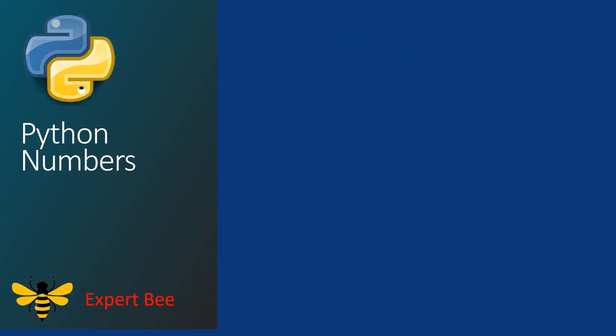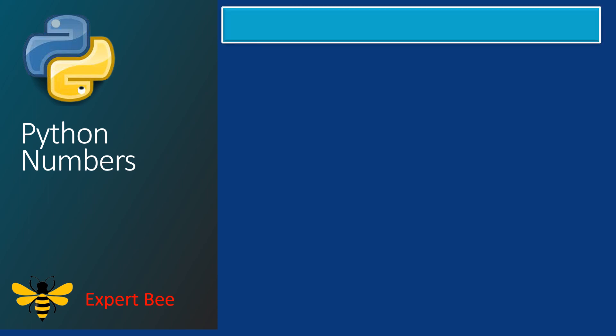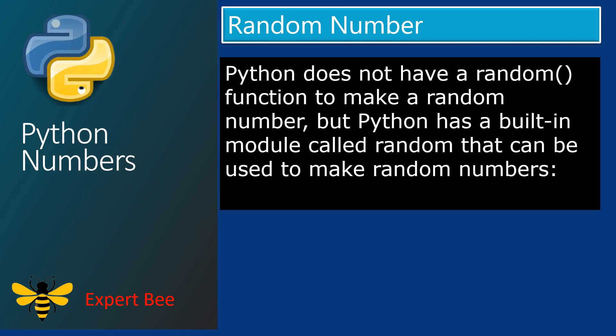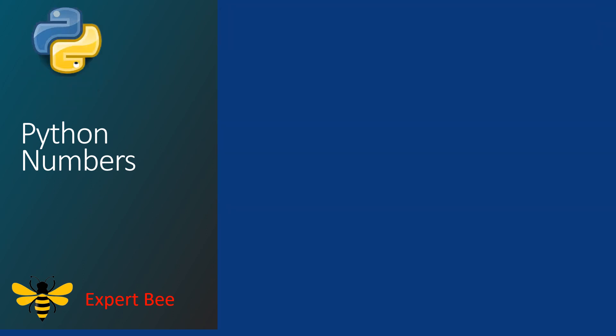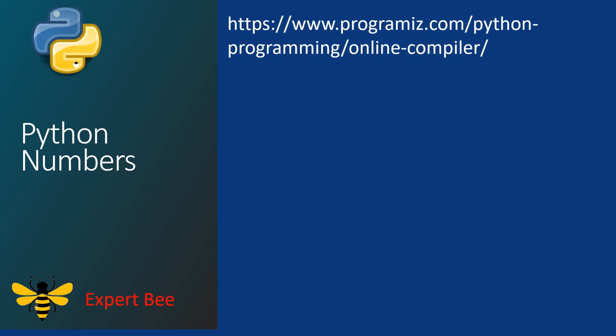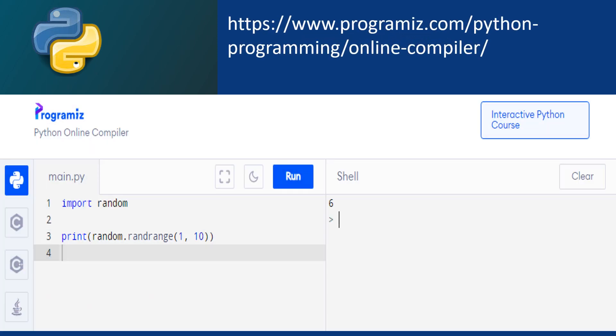After discussing the three different numeric data types, we are going to discuss random numbers. In Python, we don't have a random function, but Python has a built-in module called random that can be used to make random numbers. Random numbers can be created by importing the random module. Type: import random, print random.randrange(1, 10). After pressing the run button, you will get the output in the shell section. The output shown is 6, but you can get a different output — it can be any number from 1 to 10, depending on the random number generated.